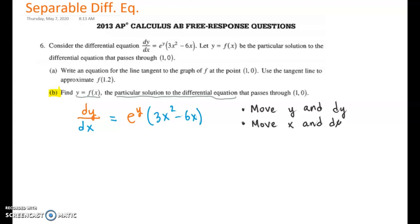I'm going to do that first step and move my dy stuff over. So I have dy/e^y equals (3x² - 6x)dx. To me, both sides are calling out for an integral sign because they both have their dx and dy. So we're going to integrate both sides.